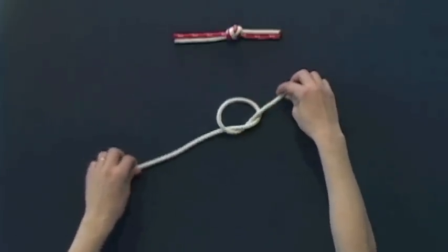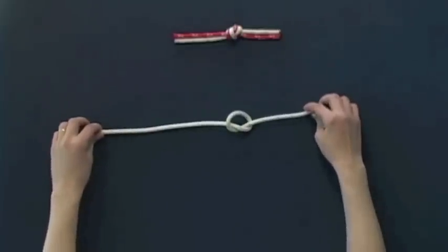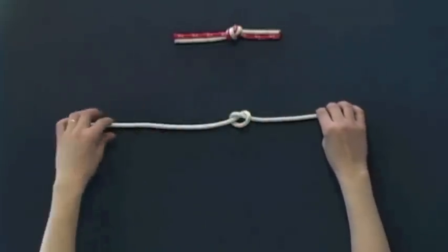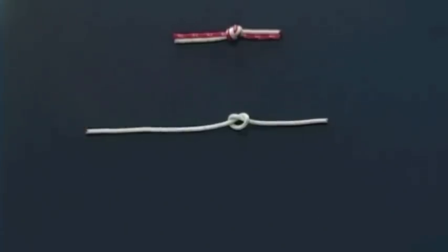Then you will pull it tight, leaving it just a bit loose so you can complete your knot. Now take your second piece of rope and put it through the center of the knot.